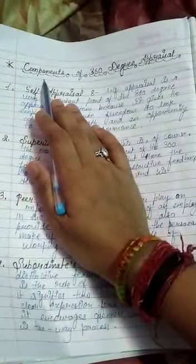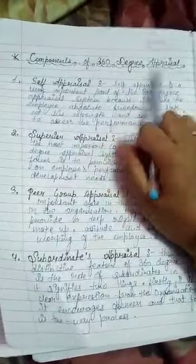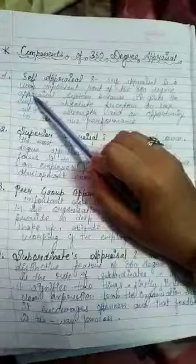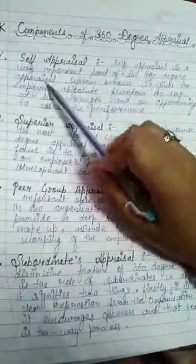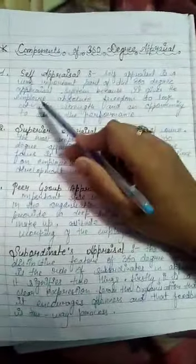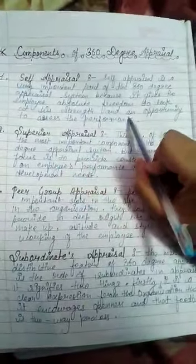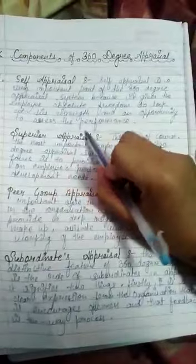The components of 360 degree appraisal are discussed here. First is Self Appraisal, which is a very important part of the system because it gives the employee absolute freedom to look at their strengths and an opportunity to assess their performance.